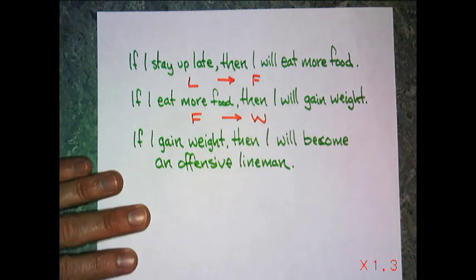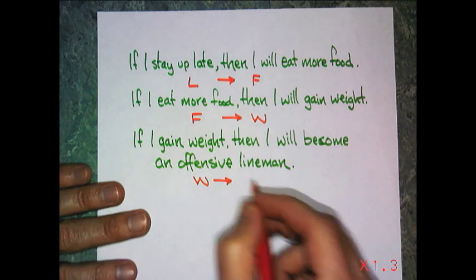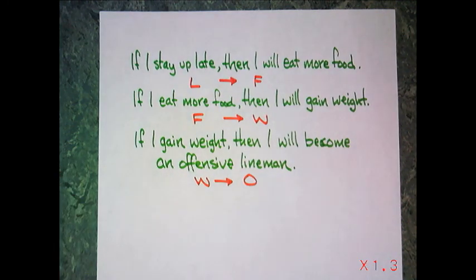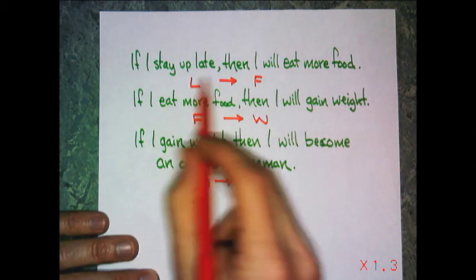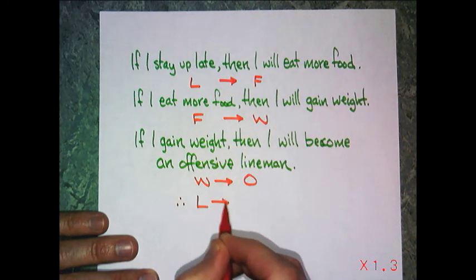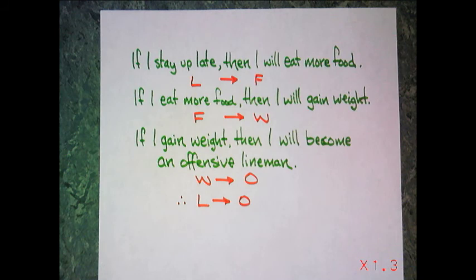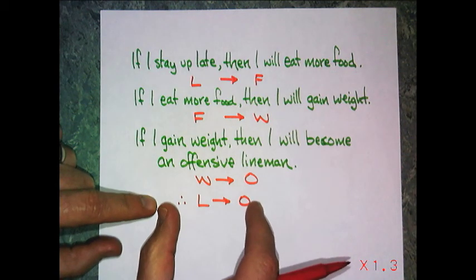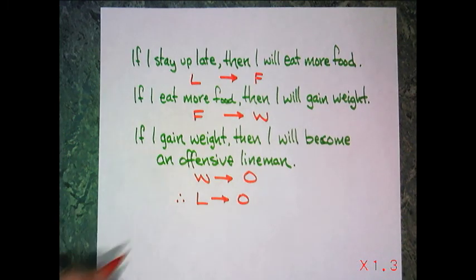If I eat more food, then I will gain weight. And if I gain weight, symbolically, would be an offensive lineman, let's say. So you could conclude that if I stay up late, then I will be an offensive lineman. That's called a connection.